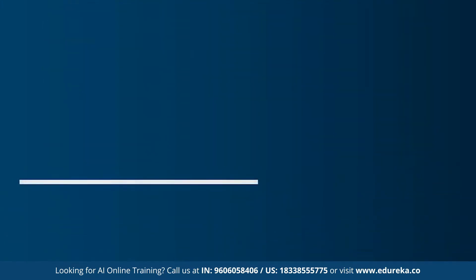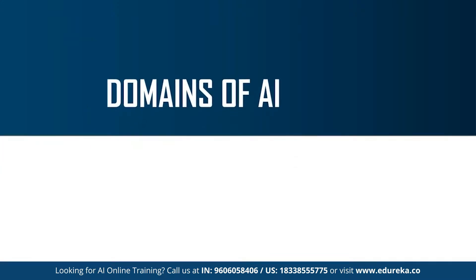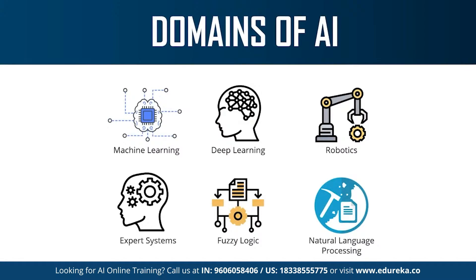Moving on to the last topic: the different domains or branches of artificial intelligence. AI can be used to solve real-world problems by implementing machine learning, deep learning, natural language processing, robotics, expert systems, and fuzzy logic. These are the different branches that AI uses to solve problems. Machine learning is basically the science of getting machines to interpret, process, and analyze data to solve real-world problems — under machine learning there's supervised, unsupervised, and reinforcement learning.